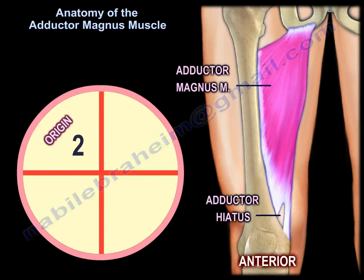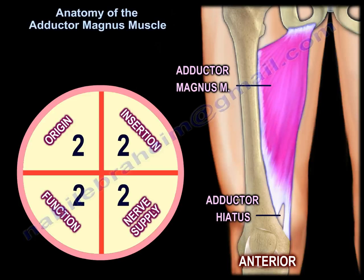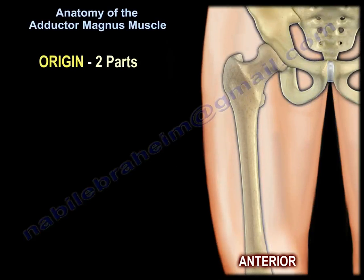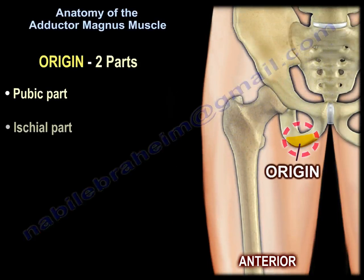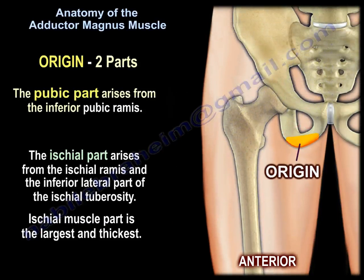We'll talk about the origin, insertion, function, and nerve supply — each section will have two components. Origin has two parts: the pubic part and the ischial part. The pubic part arises from the inferior pubic ramus. The ischial part arises from the ischial ramus and the inferior lateral part of the ischial tuberosity. The ischial muscle part is the largest and the thickest.